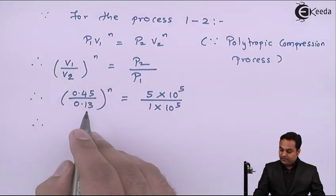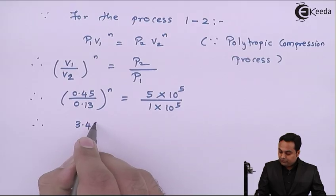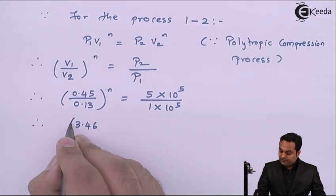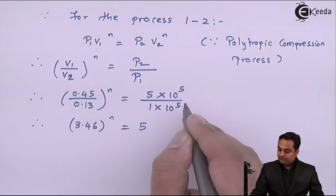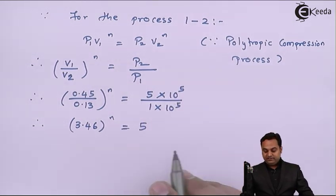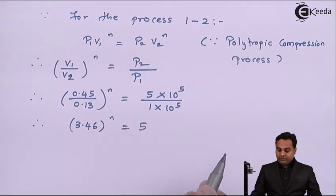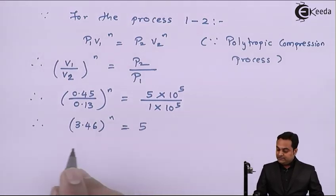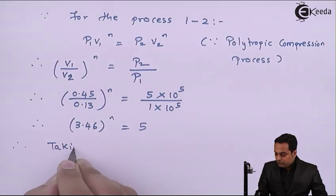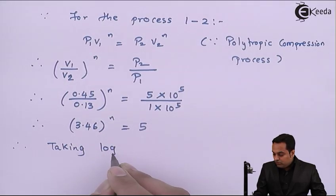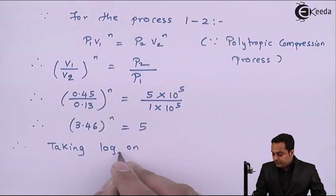I'll get it in this way: 3.46 raised to the power n is equal to 5. The 10^5 terms cancel out. Now I want the value of n, so taking log on both sides, log to the base e